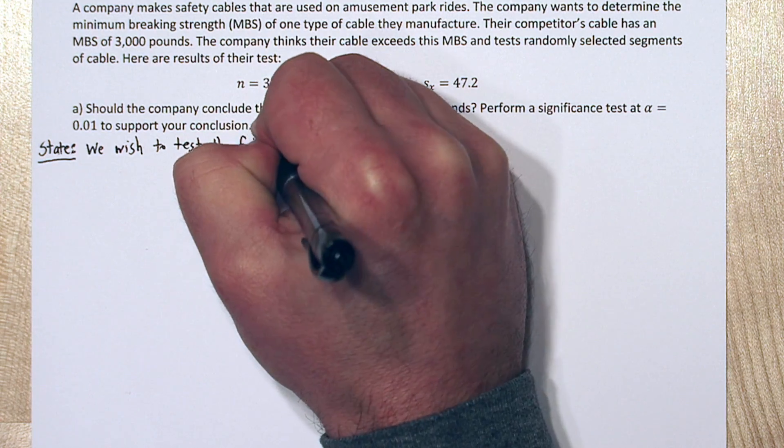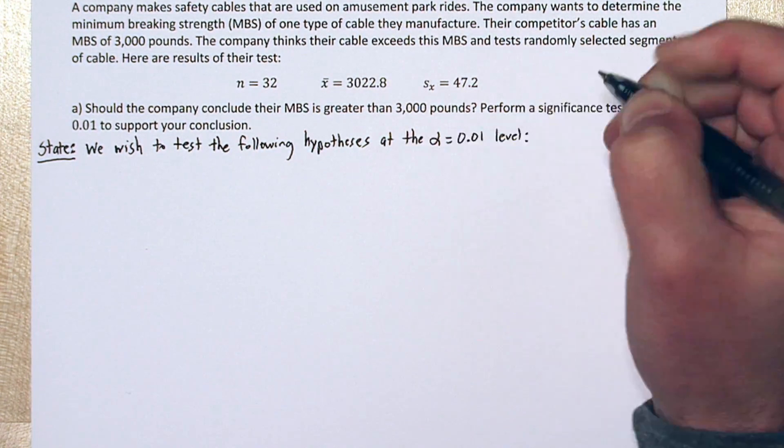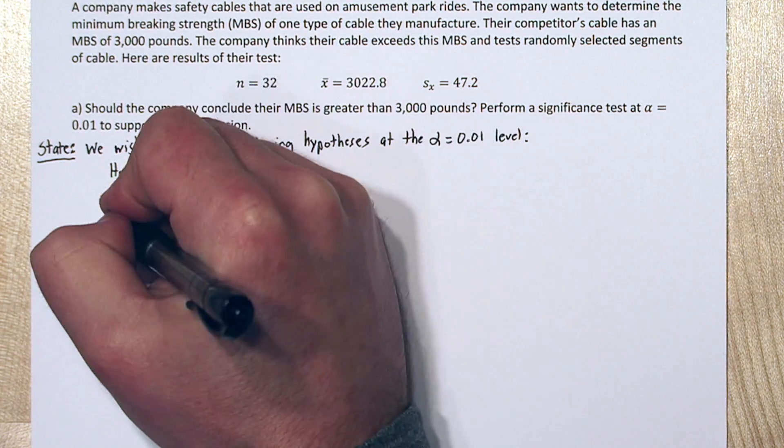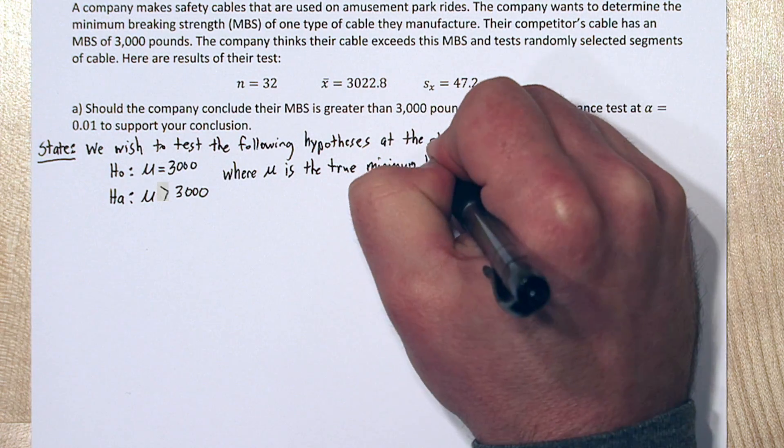we wish to test the following hypotheses at the alpha equals .01 level. Our null hypothesis is that mu equals 3000, and our alternative hypothesis is that mu is greater than 3000.